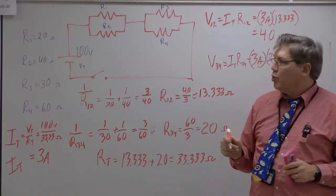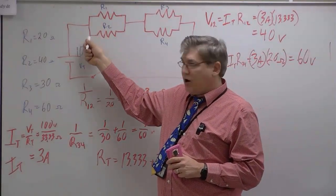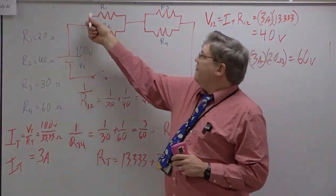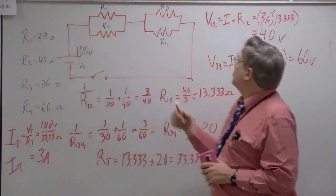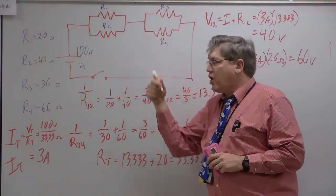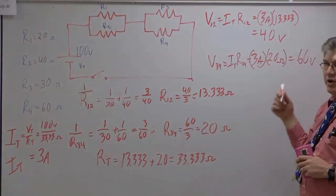Now, remember that this is a parallel circuit, so the voltage here and the voltage here are the same, which means V1 and V2 are both 40 volts. V3 and V4 are both 60 volts.